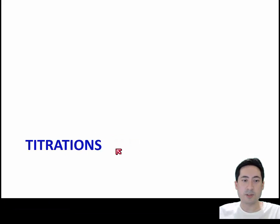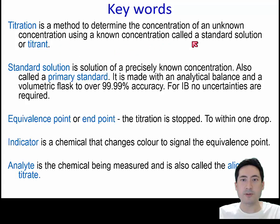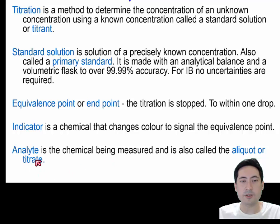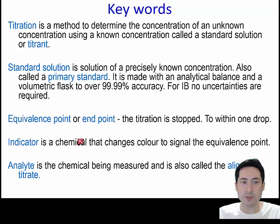This is all building up to titrations, which is one of the most common ways that we actually measure substances in the laboratory. Going through the terminology: we're going to use something of a known concentration. Because we know that concentration and work out how much is used, we can use the balanced equation to work out what the concentration of the unknown is. That's called the titrant. We're measuring it with the unknown concentration, which is the analyte, aliquot, or titrate. Often we know the reaction is finished because we have some chemical that changes color - we call that the end point or equivalence point. This substance of known concentration is called the standard solution or primary standard, and that is regarded as 100% accurate.